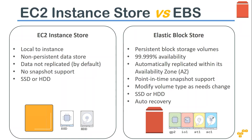Instance Store is local to the instance — you cannot detach it and attach it to another server. The moment the server is turned off, all the data is gone. There is no snapshot support, and only SSD and HDD types are supported. There are no tape drives, no cold storage, and no multiple performance optimization techniques. When you come to Elastic Block Store, you have the option of detaching it and attaching it to another server, moving between availability zones because data is automatically replicated, and the failure rate is lower.